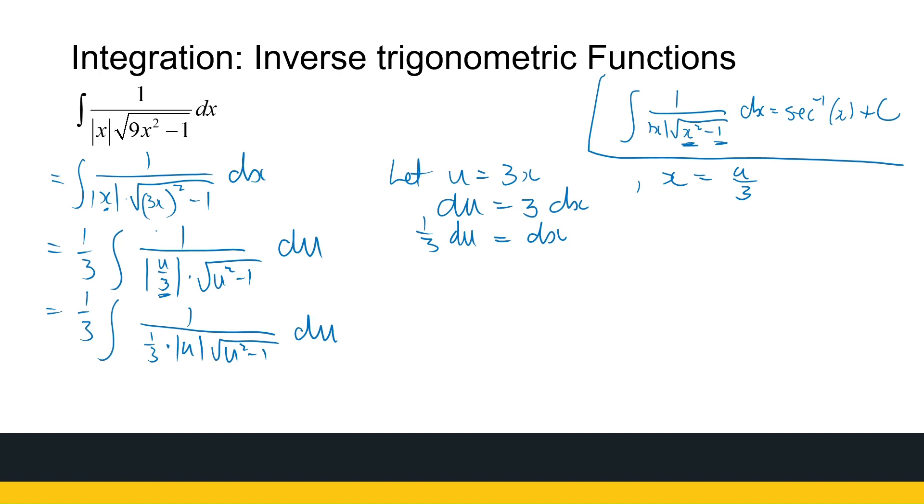times the absolute value of u times the root of u squared minus 1. 1 divided by a third is 3. So a third times 3, so I've got 1, the integral of 1 over the absolute value of u times the root of u squared minus 1 du. And now it's in the right format. It looks like what I have on the right hand side. So I can say that is equal to arc sec of u plus c and change it back to my original variable, which is x. So it's arc sec of 3x plus c. So just make sure you notice we've had a u over 3's absolute value. That's the same as the absolute value of u times a third, because the absolute value of a third is just a third.